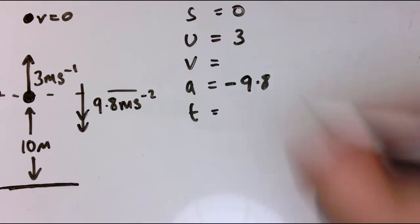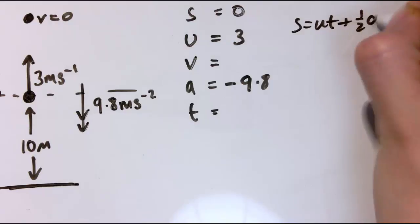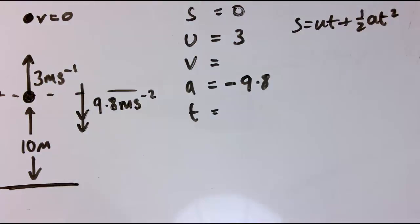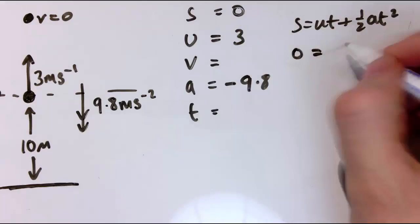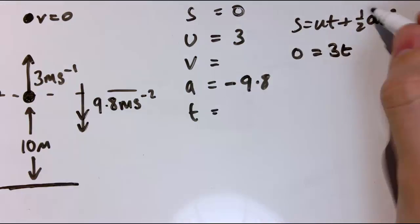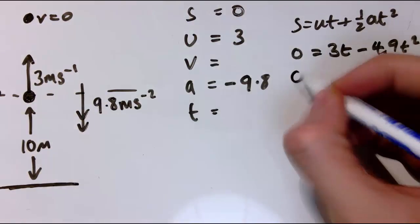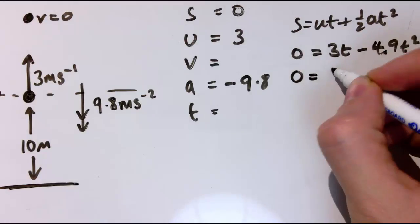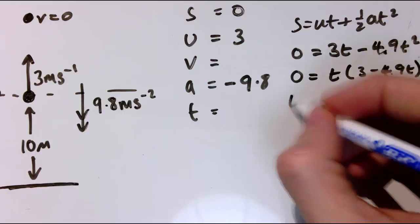So I've got S, U, and A, and I want the time T when we're back to where we start, so I need to use S equals U T plus one-half times A T squared. And I put everything in, zero equals U times T, so that's three T, and minus 4.9 T squared. Okay, so I've got a quadratic in T, so I've got zero equals, if I factorize this, T, three minus 4.9 T.